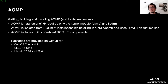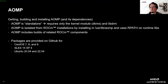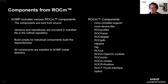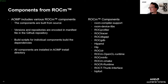In case you do not want to build from source, you can find distribution packages on the AOMP GitHub for CentOS 7 to 9 and SLES 15 SP4, as well as for Ubuntu 20.04 and 22.04.